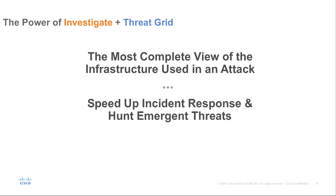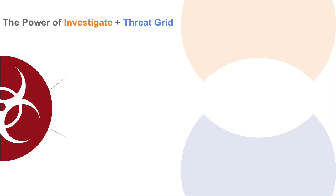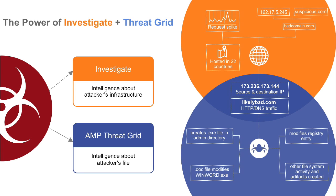You can also pivot between data points in both consoles to see the relationships between domains, IPs, networks, and malware samples. This will help reduce time to investigate incidents, even predict unknown threats, and enrich existing security data. With the API capability of both products, seamlessly integrate them into your security portfolio and automate the tedious investigation process. Together, ThreatGrid and Investigate give your security teams the real-time threat intelligence they need to fully understand the internet infrastructure and malware used in an attack.